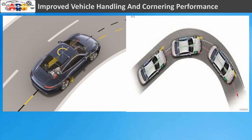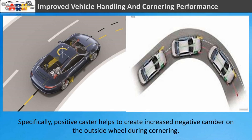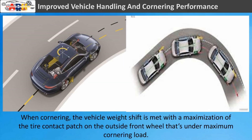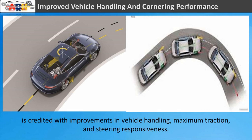Improved vehicle handling and cornering performance: caster has a direct relationship to negative camber, which is fundamental to maximizing the tire's contact patch when cornering, and therefore key to maximizing available grip. Specifically, positive caster helps create increased negative camber on the outside wheel during cornering. The vehicle's weight shift is met with maximization of the tire contact patch on the outside front wheel under maximum cornering load. In performance driving, a caster increase — sometimes to the maximum available setting — is credited with improvements in vehicle handling, maximum traction, and steering responsiveness.